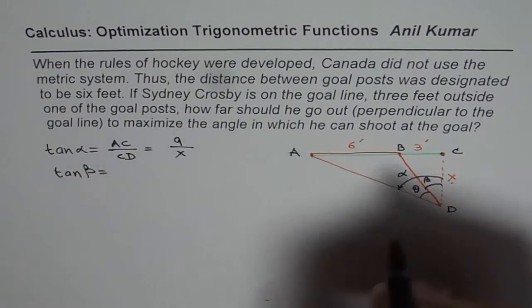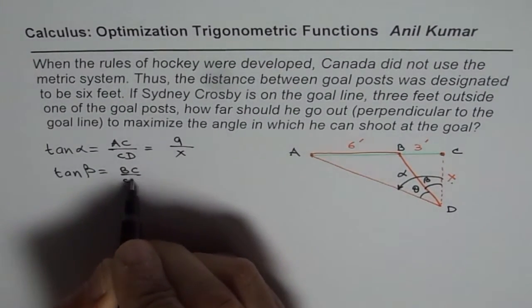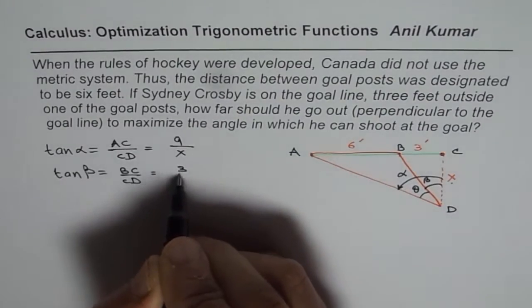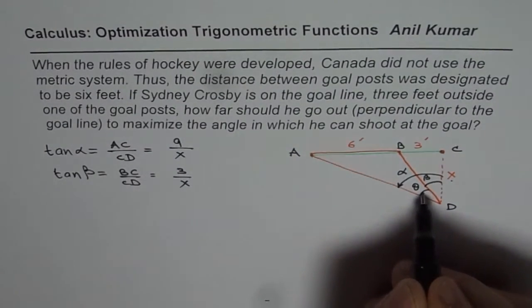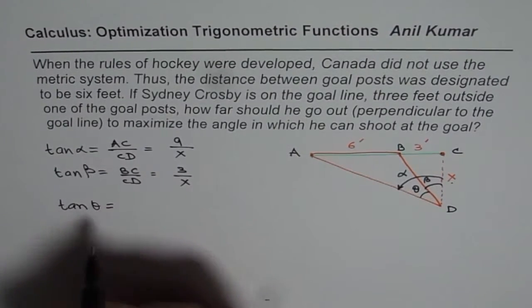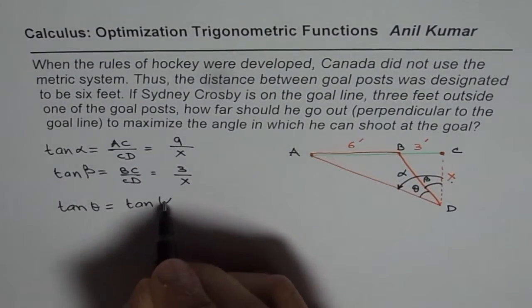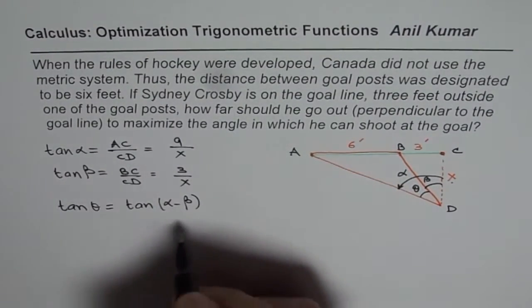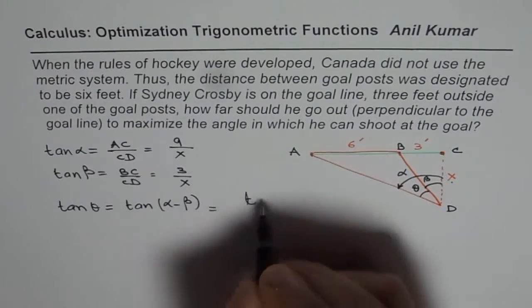And what is tan beta? Tan beta, the smaller angle, is 3 over x, or you could say BC over CD, which is 3 over x. Now we want relation for tan theta and maximize theta. So what is tan theta? Tan theta could be written as tan of alpha minus beta. And you know the formula for this, which is tan A minus tan B.